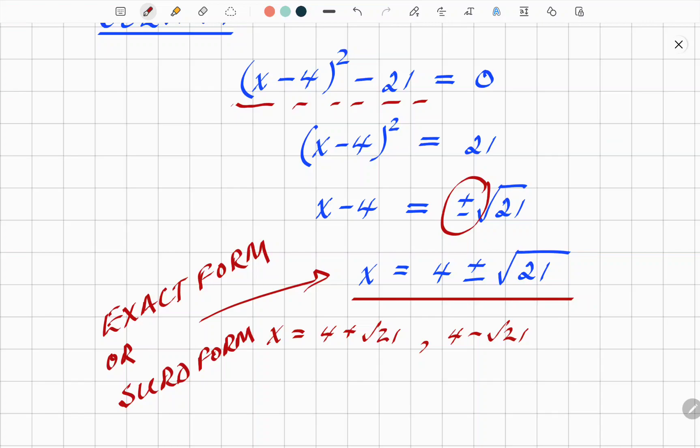So if you get a quadratic question in some of the more advanced GCSE papers, where they say give your answer in exact form or surd form, this is what they're expecting. And obviously, sometimes you'll get a question that says give it to two decimal places or something, then obviously punch it into your calculator. So that is everything to do with completed square form of the quadratic.